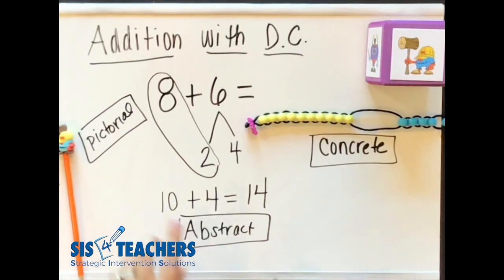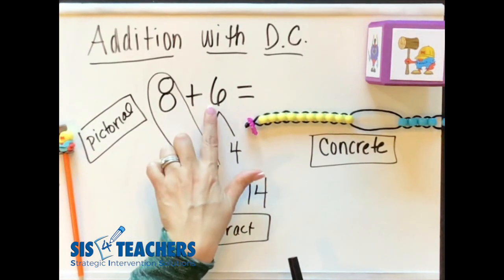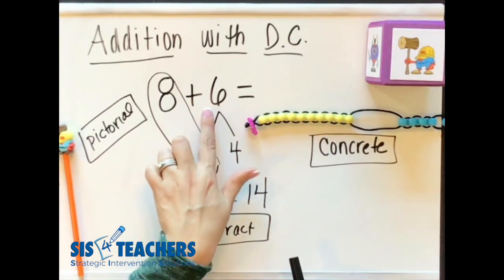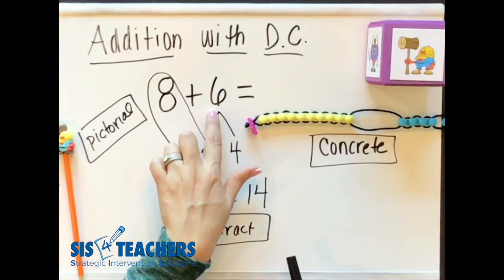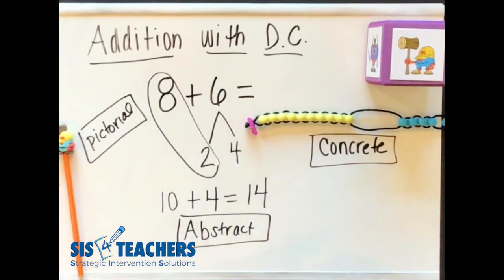We can also do this a different way. Students don't necessarily have to make the 8 make a 10. They could certainly decompose the 8 into 4 and 4 and make this 6 a 10. It can go either way showing the different strategies that students know.